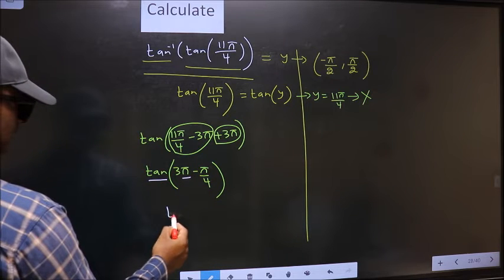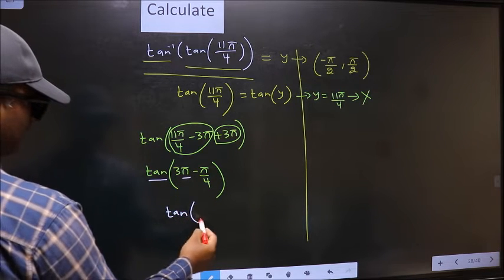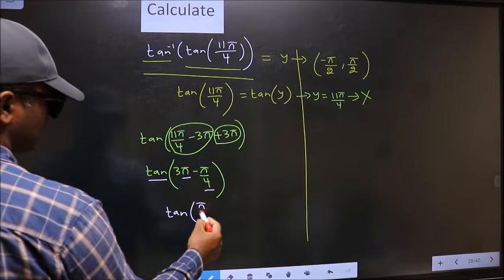So tan is not going to change. It will remain tan. And inside we get this angle π by 4.